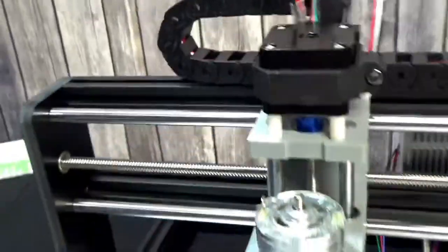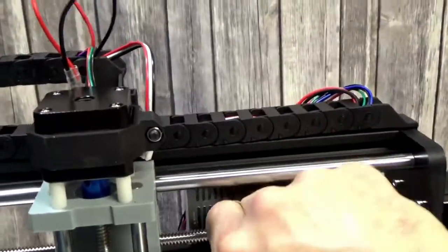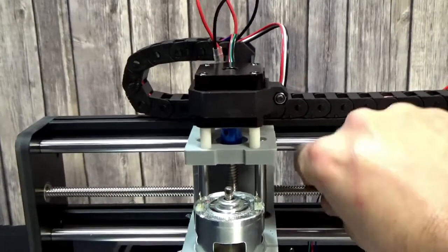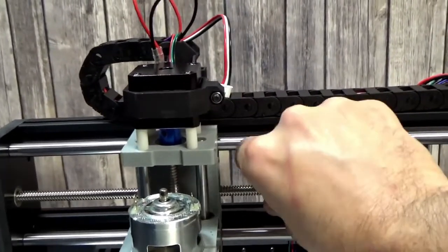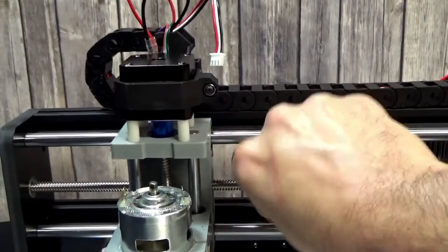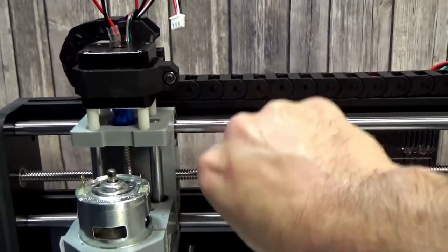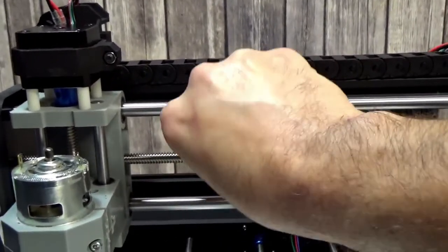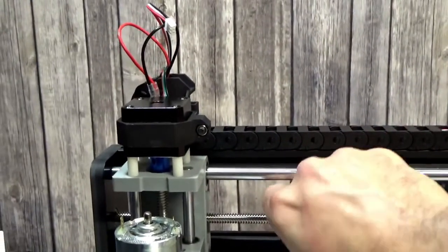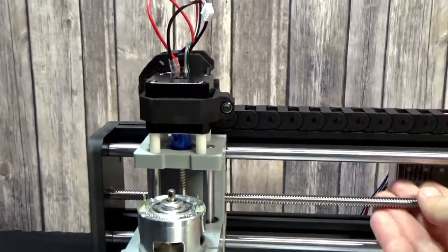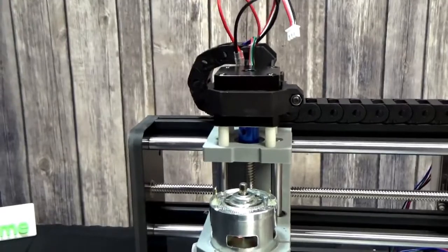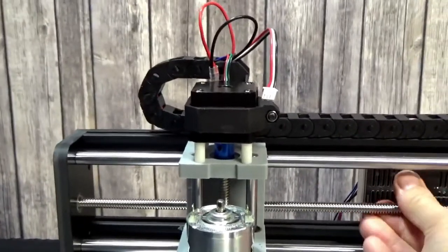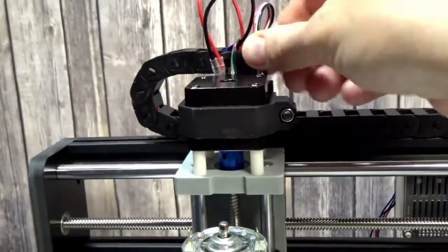What will happen is as your gantry slides, or as your carriage slides back and forth, this drag chain will unroll right there like that. And then likewise when it goes the other way it will roll up. Probably should have hooked it up to a computer. But you get the idea.